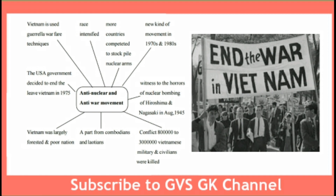One more topic in brain mapping method is the anti-nuclear and anti-war movement. The arms race intensified as more countries competed to stockpile nuclear arms. A new kind of movement emerged in the 1970s and 1980s. The entire world witnessed the horrors of nuclear bombing of Hiroshima and Nagasaki in August 1945. In the Vietnam conflict, 8 lakh to 30 lakh Vietnamese military and civilians were killed, apart from Cambodians and Laotians. Vietnam was largely forested and poor. The USA eventually decided to end the war and leave Vietnam in 1975. The Vietnamese used guerrilla warfare techniques.